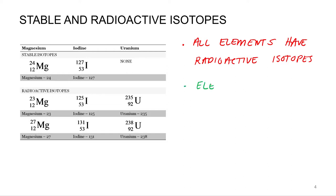Elements past bismuth have no stable isotopes.